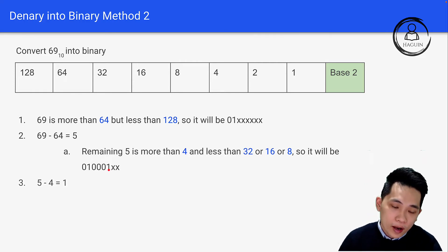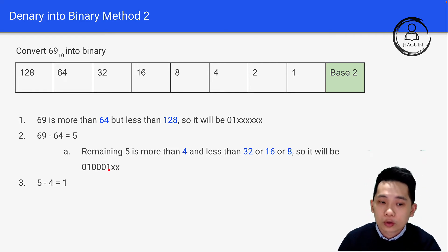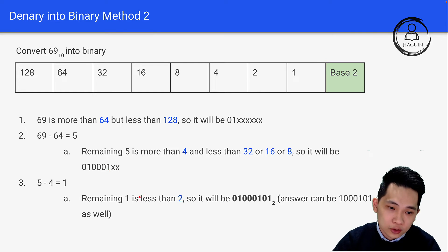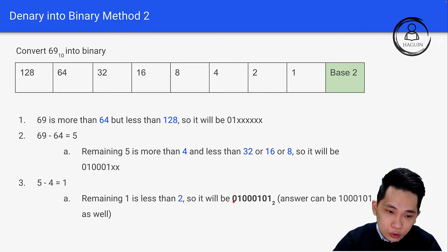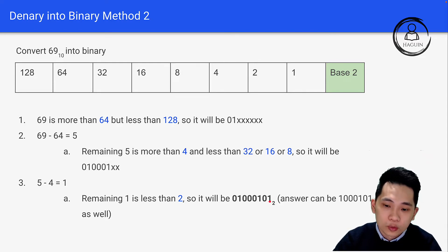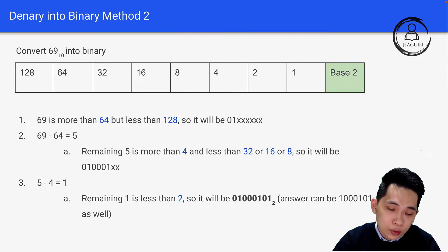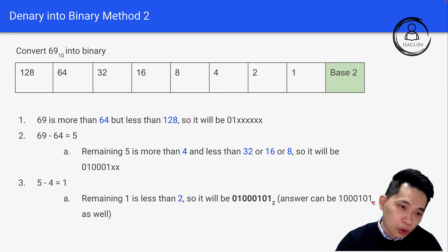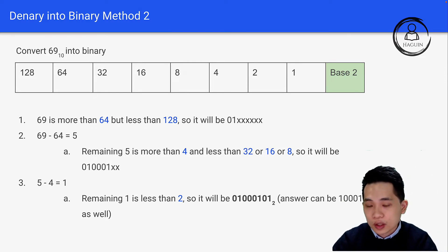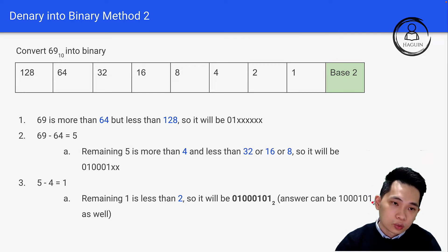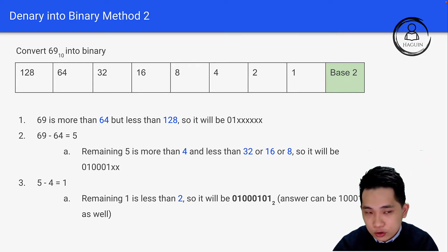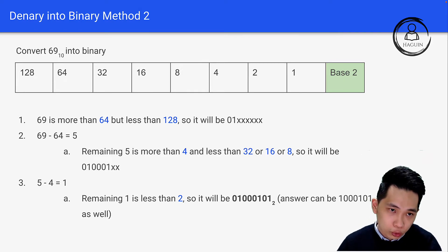We're left with 5 minus 4, which equals 1. Since 1 is less than 2, the bit for 2 is 0 and the bit for 1 is 1. So the final answer is 1000101. You can optionally add a leading 0; it doesn't really matter. This is the method I prefer — I personally prefer Method 2 over Method 1.